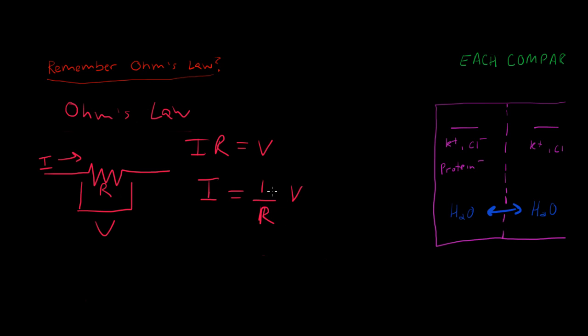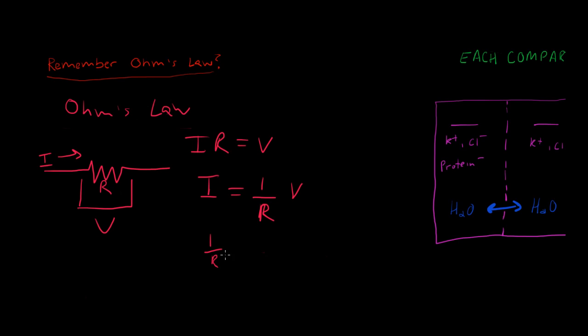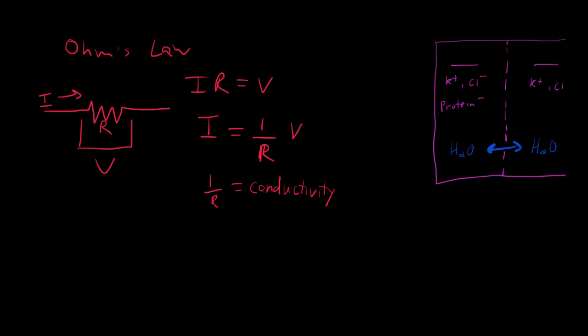Now what is this 1 over R? It's the opposite of R. When resistance is increasing, then 1 over R is decreasing. It's the opposite concept of resistance. One possible term could be conductivity. If resistance is the opposing action, then conductivity is more of an aiding action. It's how easily can this flow go through.